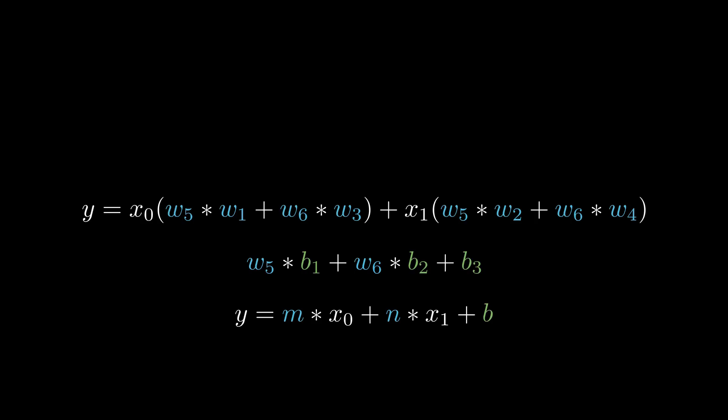The effect of adjusting weights and biases just changes the gradient of the input and the y intercept. Therefore, adding a hidden layer won't introduce the curve required to correctly classify this data.